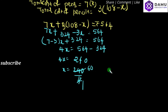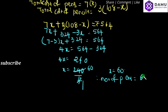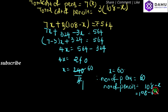Therefore the number of pens is equal to 60. The number of pencils will be equal to 108 minus x, that is 108 minus 60, which equals 48. Thanks for watching, please subscribe.